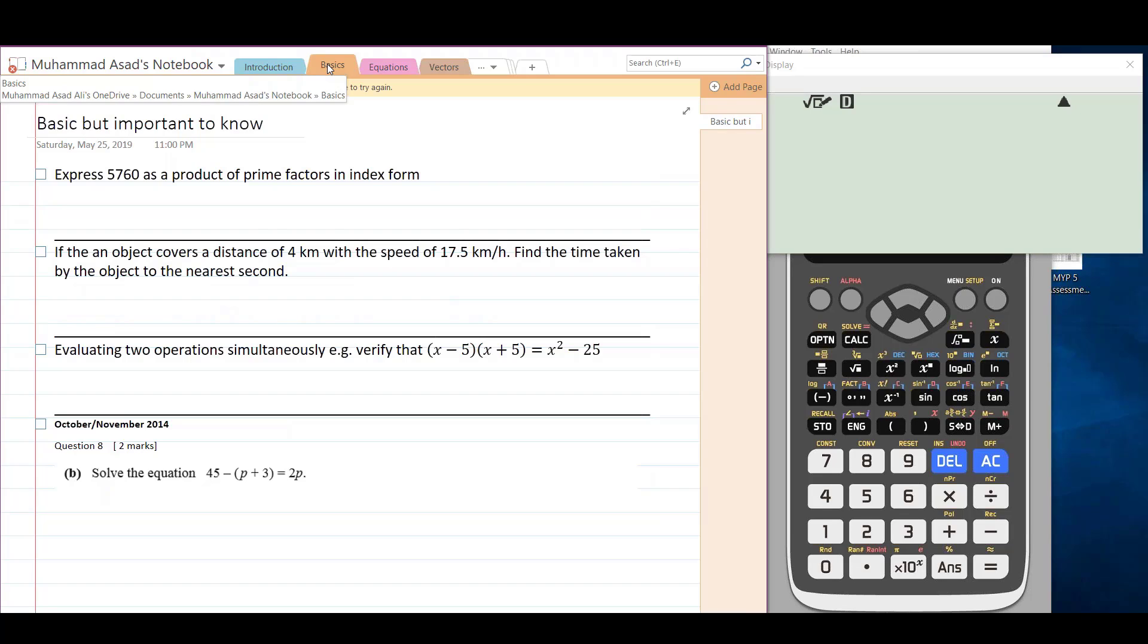Let's do the first question: express 5760 as a product of prime factors in index form.